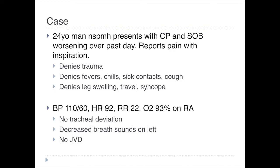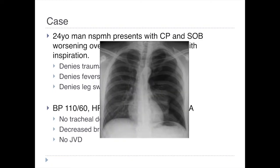What are our differentials at this point? On our differentials should be something in the pleural cavity. We could be thinking things like pneumothorax, or even things like a pleural effusion, hemothorax, or chylothorax. Seeing as how this man is having some chest symptoms, we decide to get an x-ray.